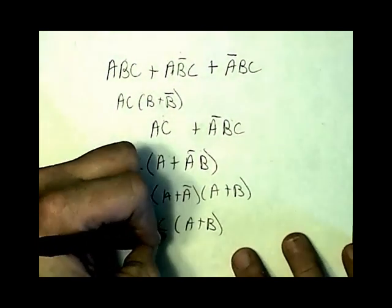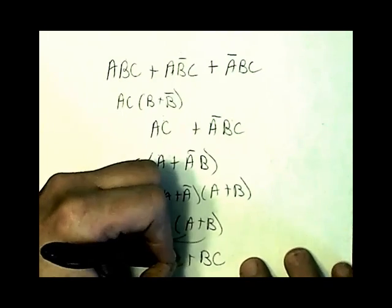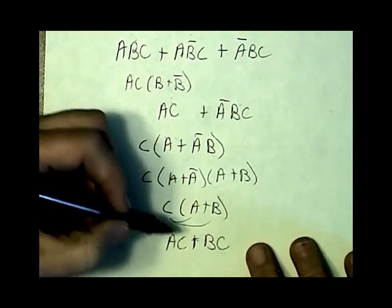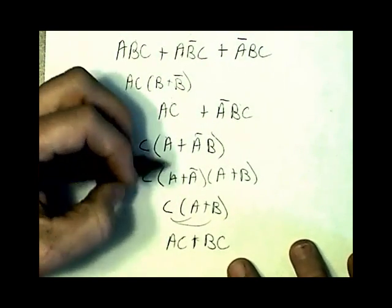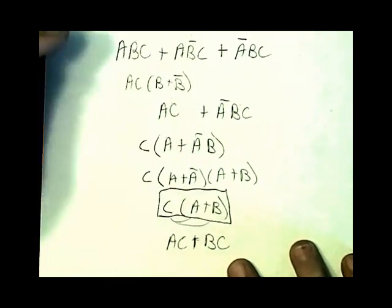Now I could distribute this out and have AC plus BC. But you would notice that I cannot combine or recombine this in any way to make it shorter. So this is the shortest version of my answer.